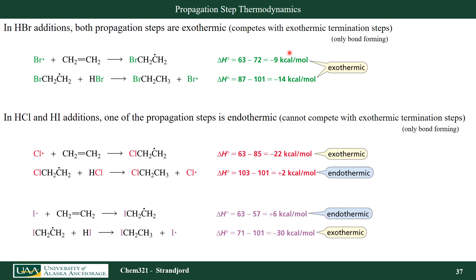I see that both propagation steps for bromine radical are actually exothermic reactions. The first one is exothermic by 9 kilocalories per mole, and the second is exothermic by 14 kilocalories per mole. All of my termination steps are also exothermic because they're only bond-forming with no bond breaking, but they're not as exothermic. So these radical chain reactions are actually favored. If I look at the thermodynamics of radical reactions of chlorine and iodine, I find that one of the propagation steps is actually endothermic.